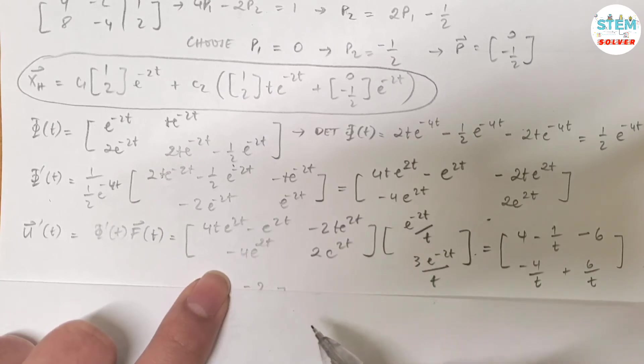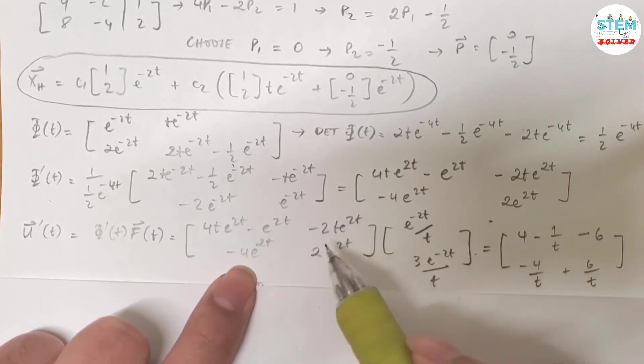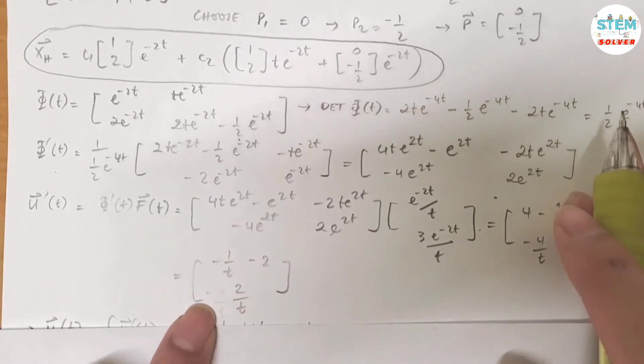So I caution you: Do not swap the order, because multiplying matrices is not like when you multiply variables or numbers. Switching the order will affect the final answer. Keep in mind that. Multiply these together, it gives me this one. Simplify it, I get this.